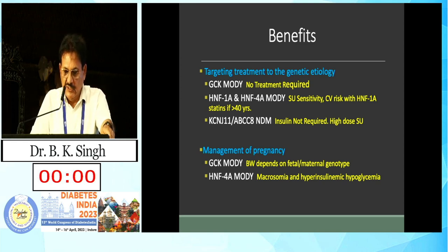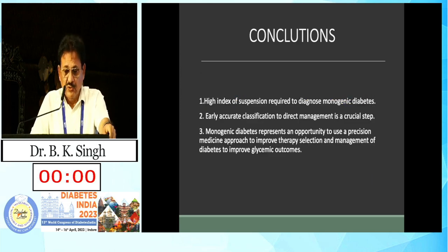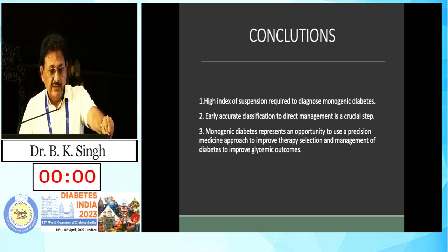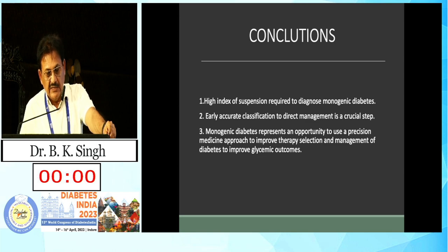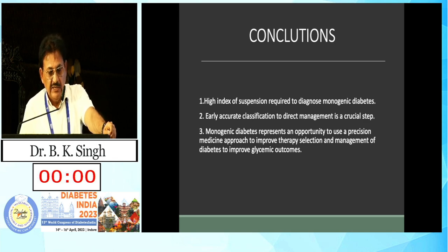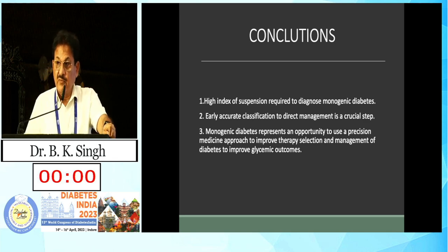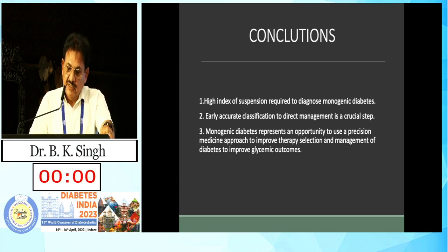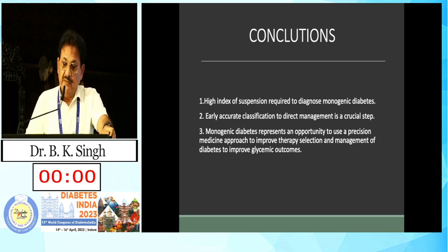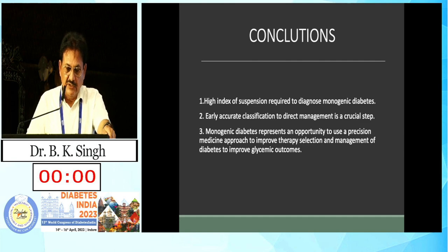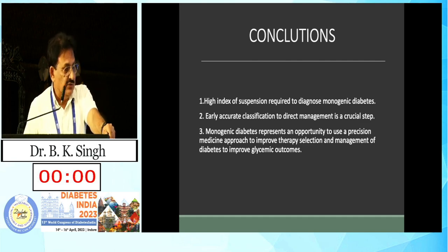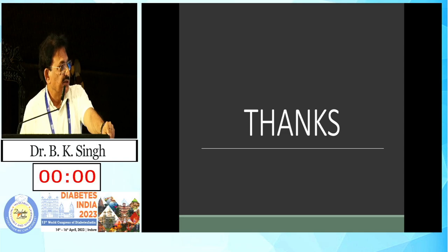In conclusion, a high index of suspicion is required to diagnose monogenic diabetes. Early accurate classification is needed to direct management, and monogenic diabetes represents an opportunity to use a precision medicine approach to improve therapy selection for diabetes. Thank you very much for your patience.